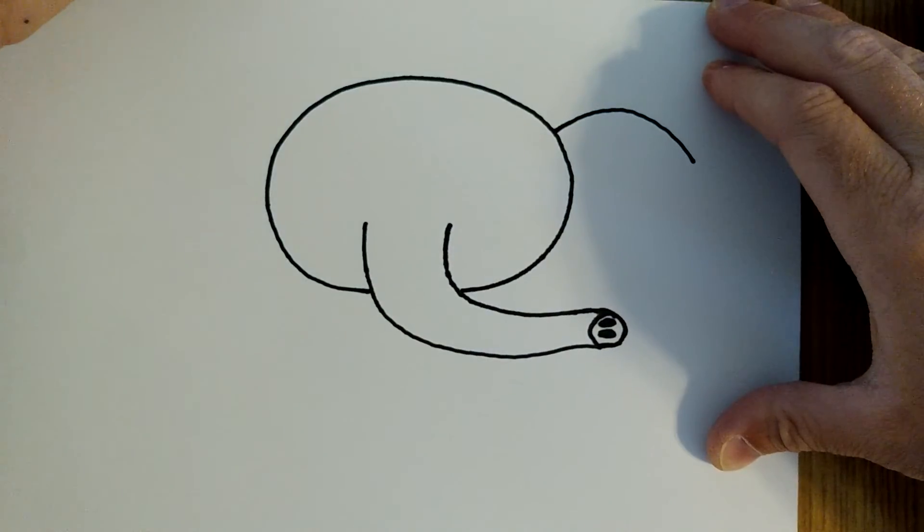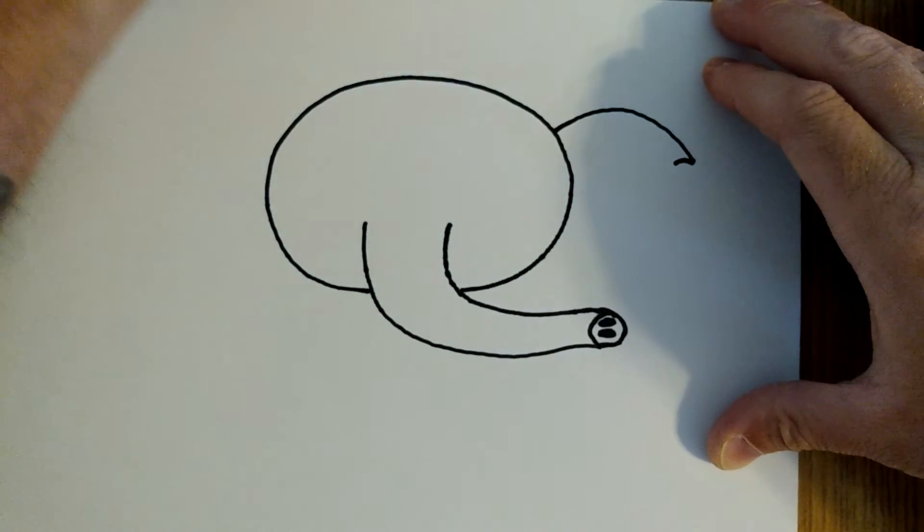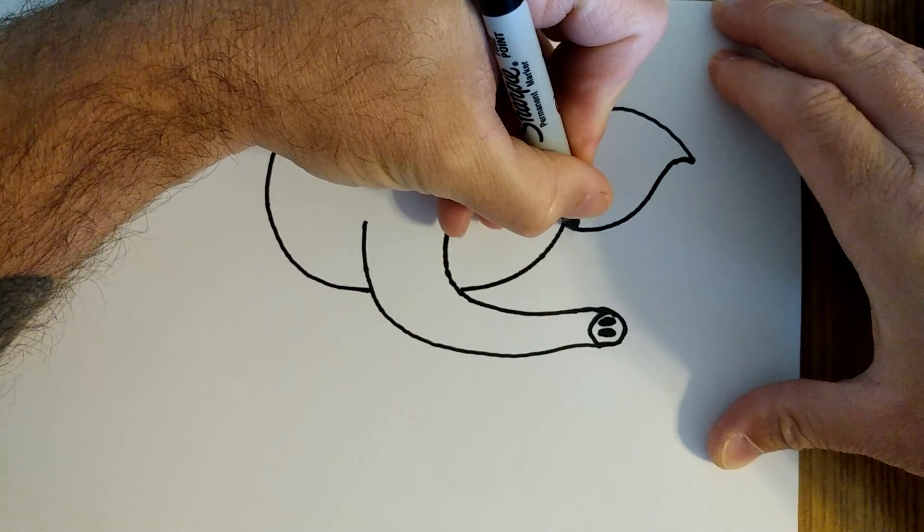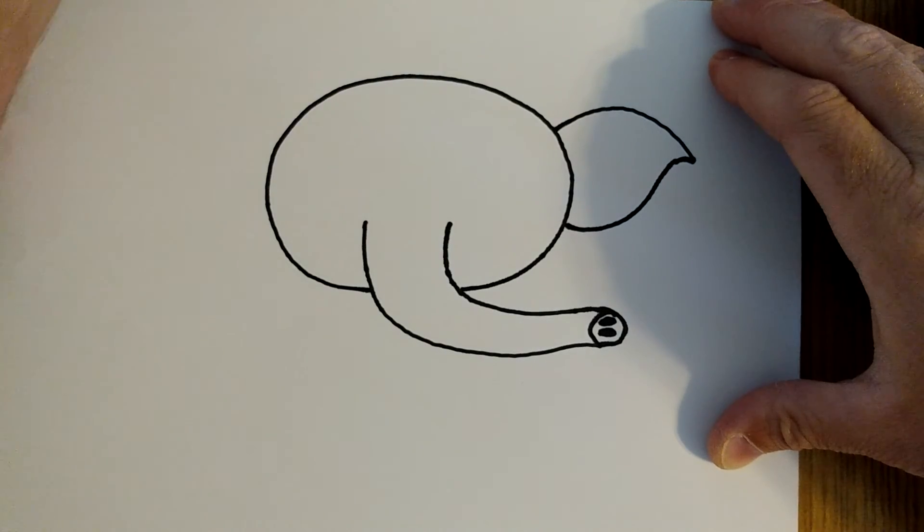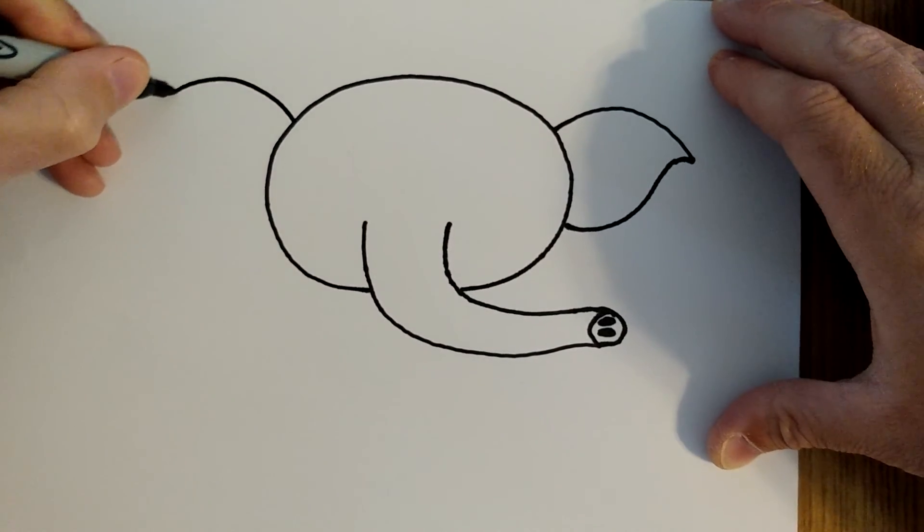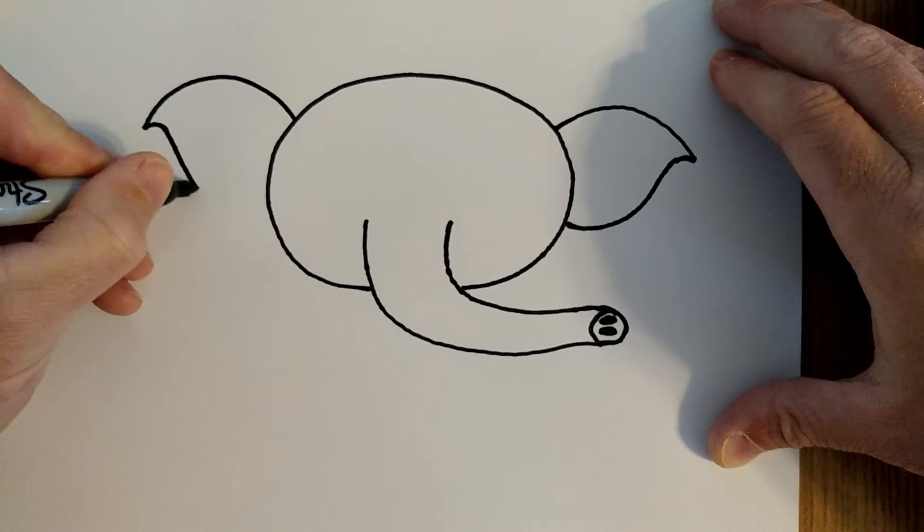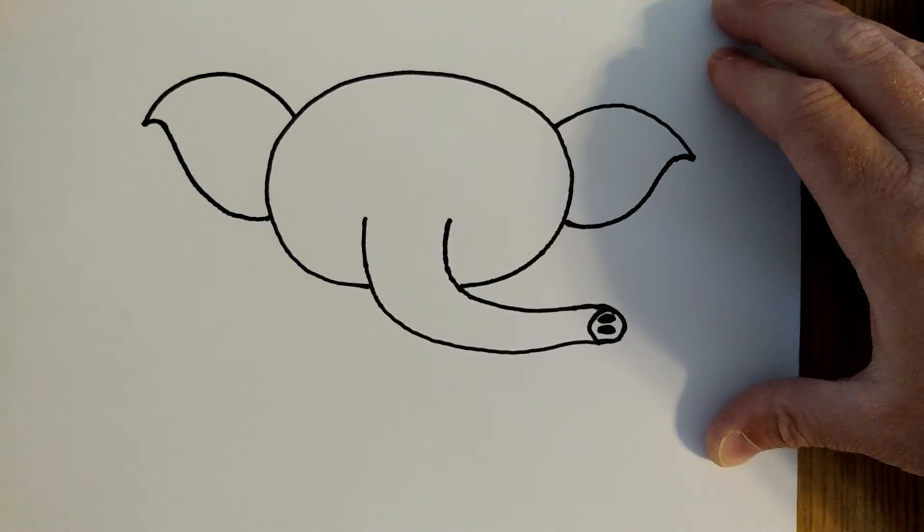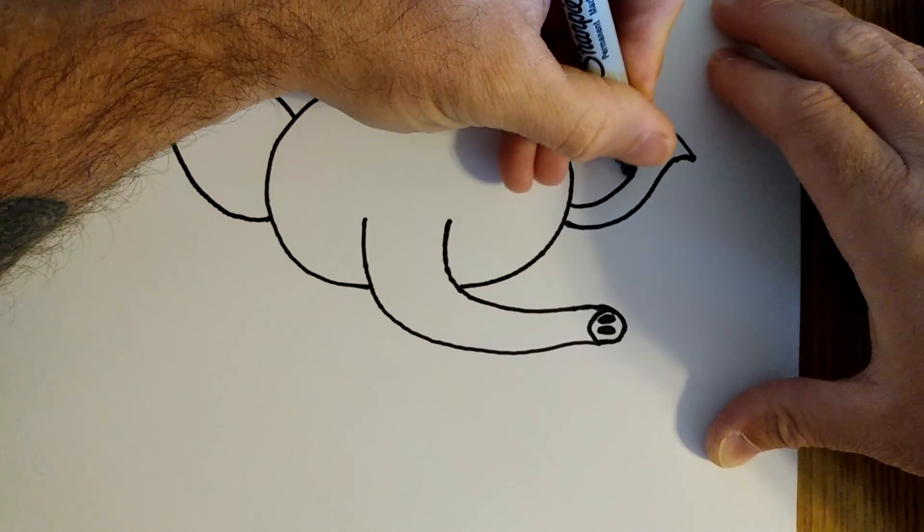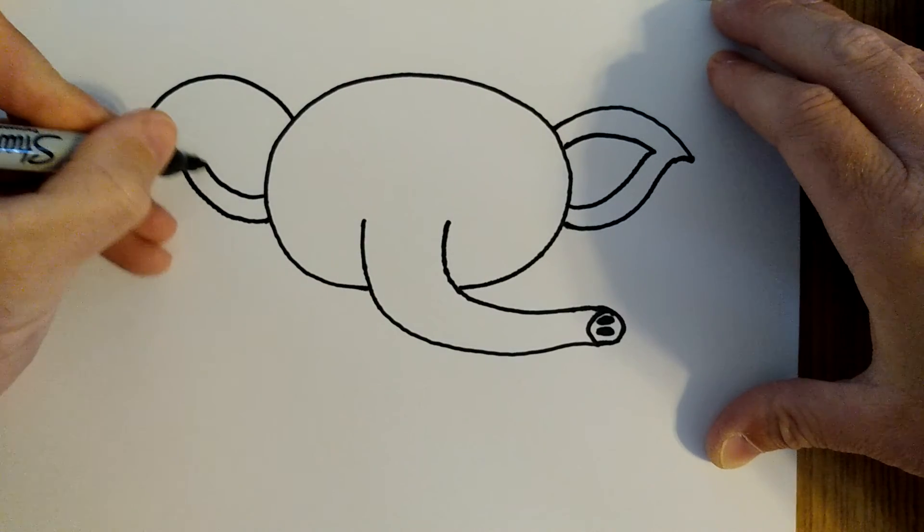Now off of the head we need some ears, so I'm going to draw a curve, hook it like that, curve down and in. Similar on this side, curve, hook it down and in. Now on the inside we're going to do basically that same shape, smaller.